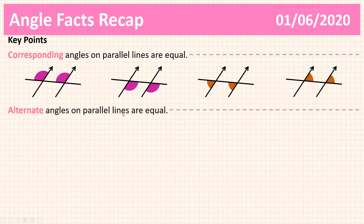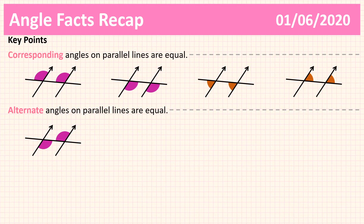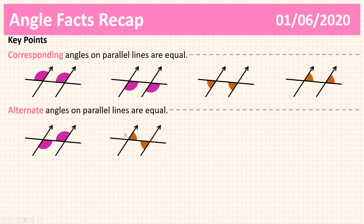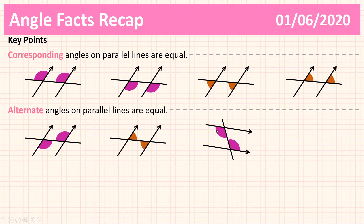Alternate angles on parallel lines are equal. For alternate angles: both angles are inside — interior to — the parallel lines, and one is on each side of the transversal (opposite sides). Checking our diagrams: both interior to the parallel lines, one on one side of the transversal and one on the other side. All our examples follow the same pattern.